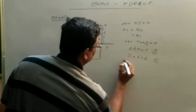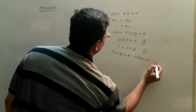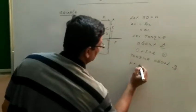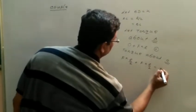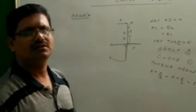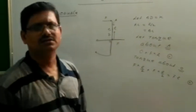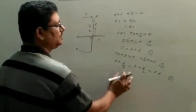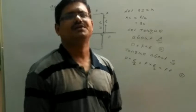Now torque about C. Torque about C equals F multiplied by L by 2, plus F multiplied by L by 2, which equals FL. Both forces create torques in the same direction, so we add them. Therefore, the total torque about point C is equal to FL in the inward normal direction.